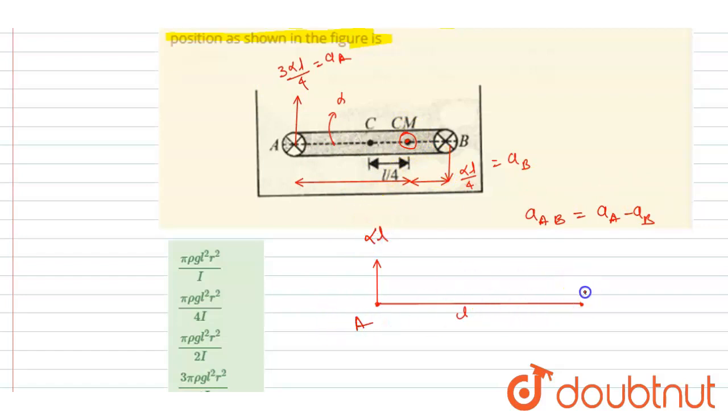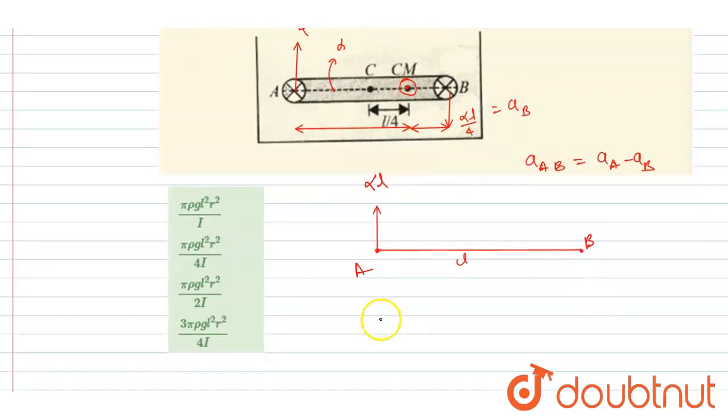So basically, the alpha of A with respect to B will be the same as the alpha about the center of mass.